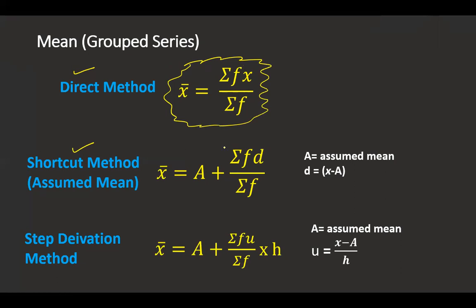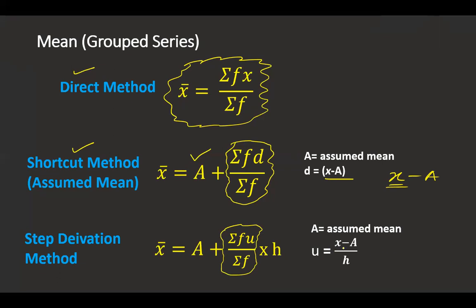In the shortcut method, I am going to add A to the formula. In the deviation, I am going to subtract A from each value — that you have to note down. Similarly, for the step deviation method, U is calculated as x minus A divided by h. So I am subtracting A and dividing by h; the opposite operation gives: add A and multiply by h. This is what you have to remember about the formulas.